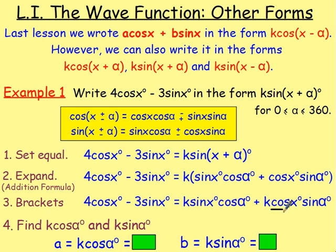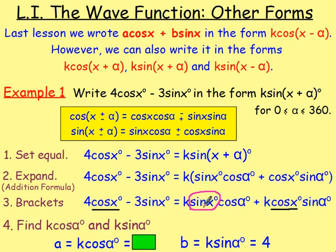From there, same as last lesson, you want to find the values of k cos α and k sin α by looking at the coefficients. The coefficient of cos x on the right-hand side is k sin α. On the left-hand side, the coefficient of cos x is 4. Because both sides are equal, k sin α equals 4. Then the coefficient of sin x on the right is k cos α, and on the left it is negative 3, so k cos α equals negative 3.